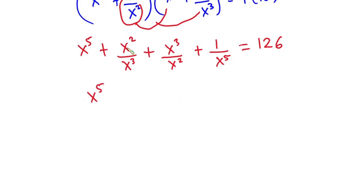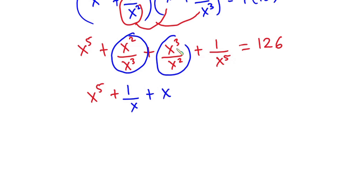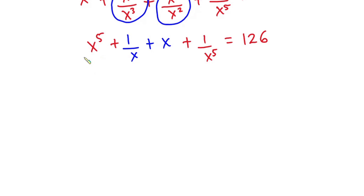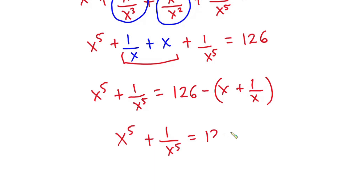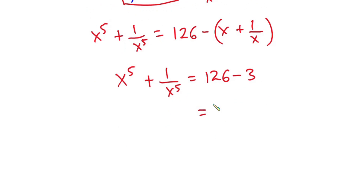Simplifying, we have x to the fifth power plus 1 over x plus x plus 1 over x to the fifth power equals 126. Making x to the fifth power plus 1 over x to the fifth power the subject, we get x to the fifth power plus 1 over x to the fifth power equals 126 minus (x plus 1 over x). From equation star we know x plus 1 over x is 3, so we have 126 minus 3, which is 123.